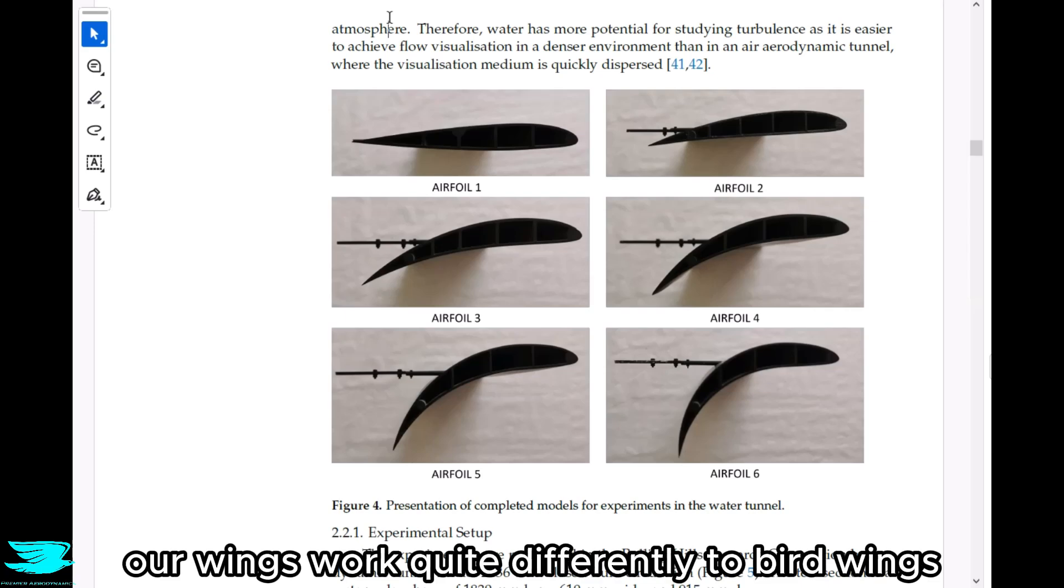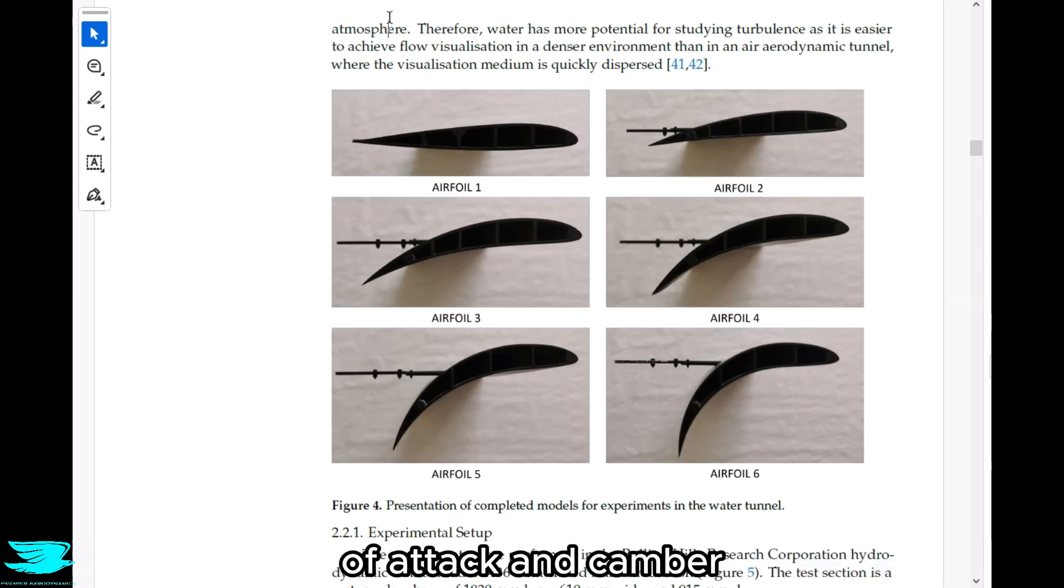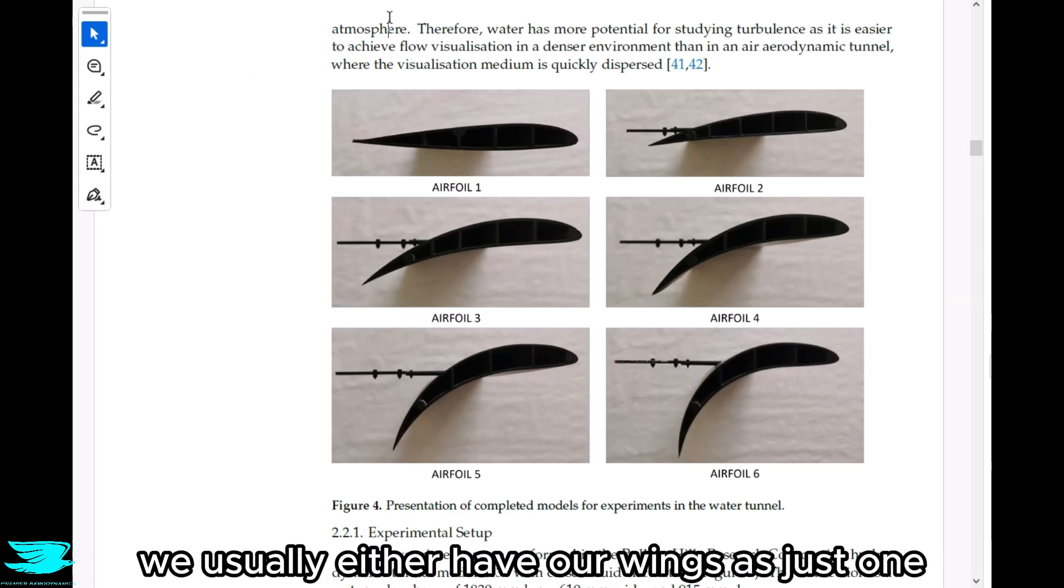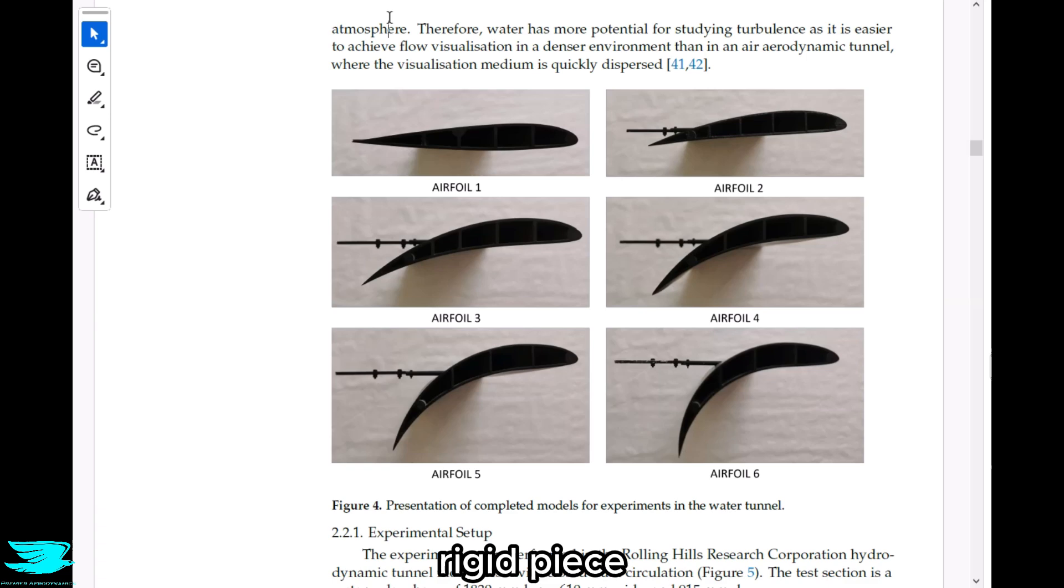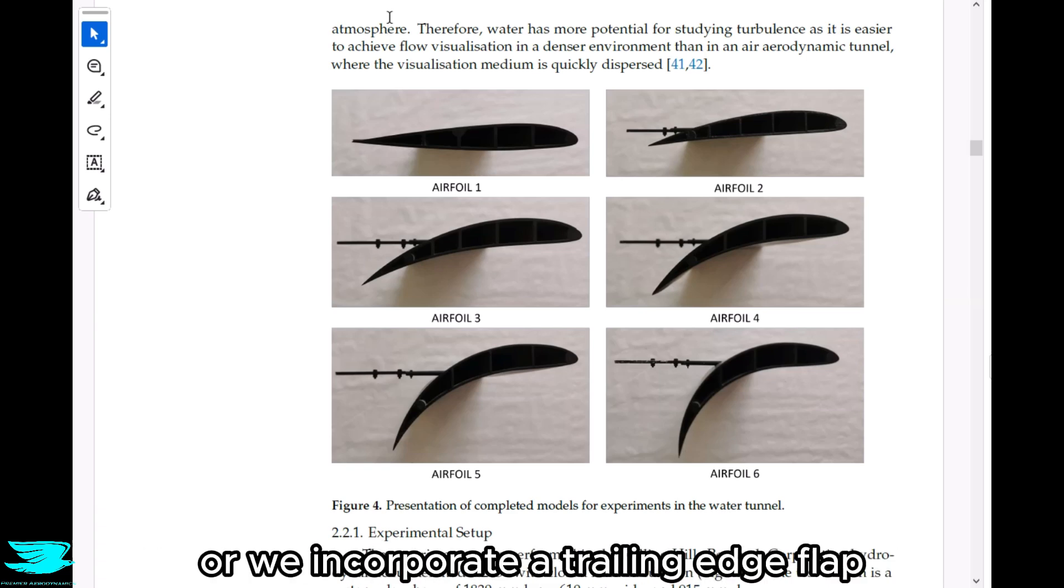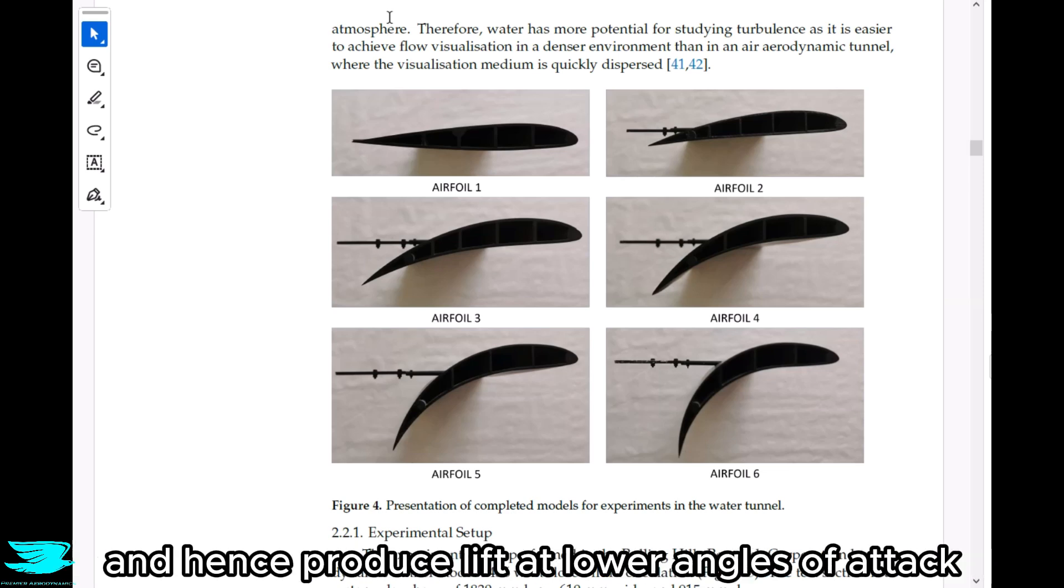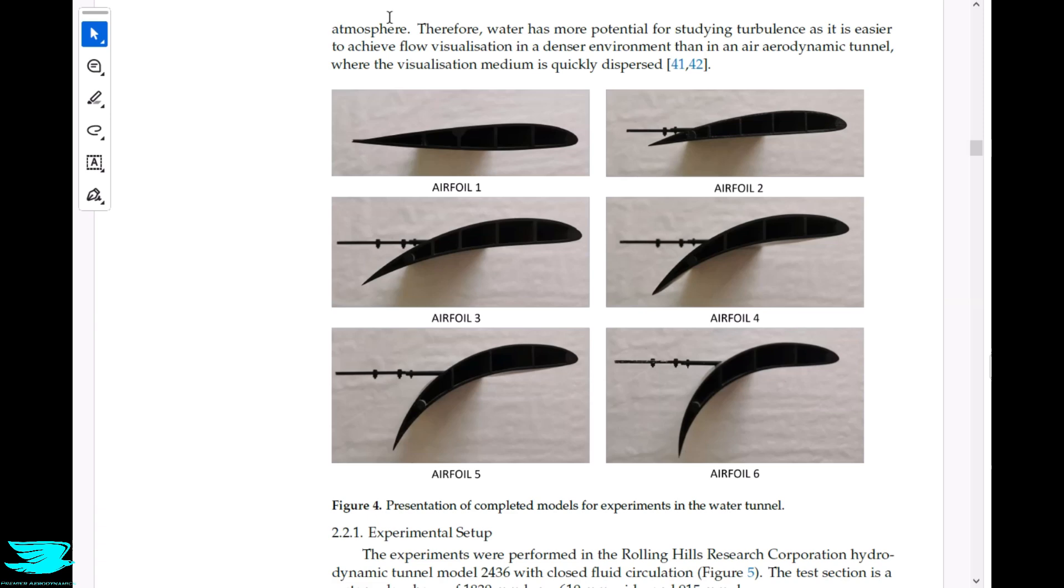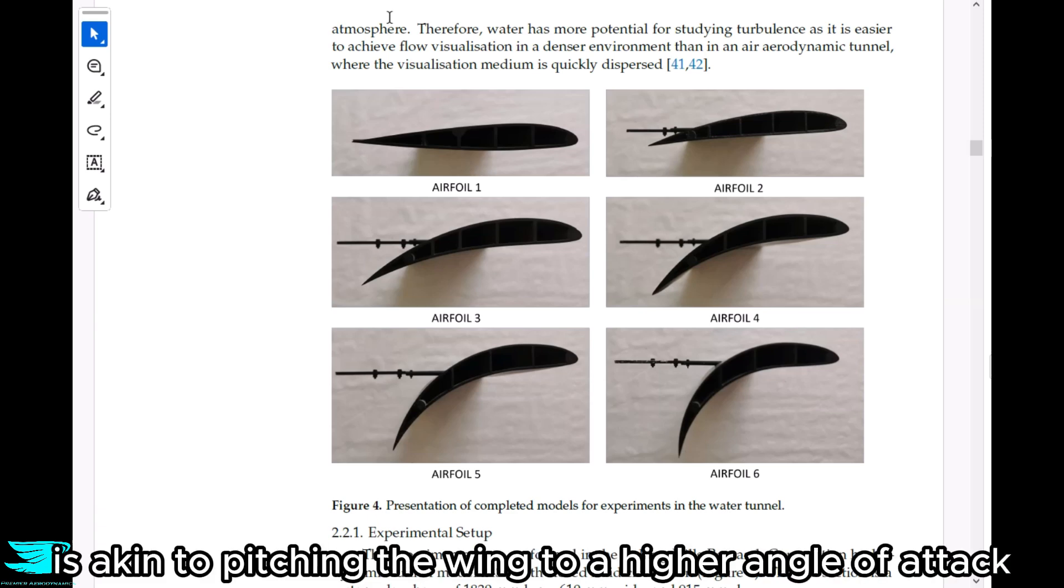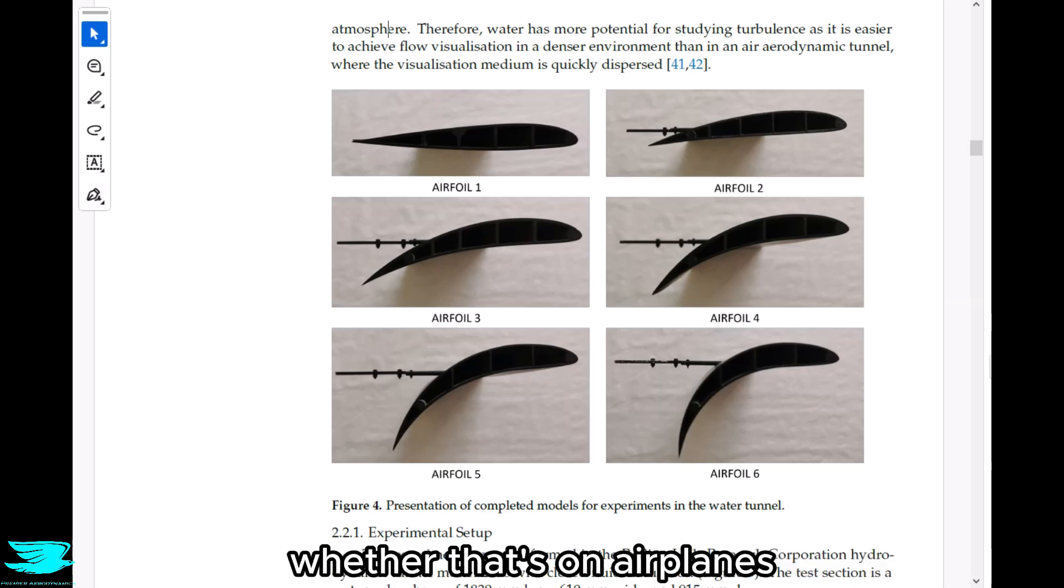Our wings work quite differently to bird wings. One of the major differences is how we change the angle of attack and camber. We usually either have our wings as just one rigid piece that we then pitch to different angles of attack, or we incorporate a trailing edge flap that we deflect downwards to produce more camber and hence produce lift at low angle of attack. That latter way is akin to pitching the wing to a higher angle of attack effectively. And our wings have been wildly successful, whether that's on airplanes, wind turbines, cars, and so on.